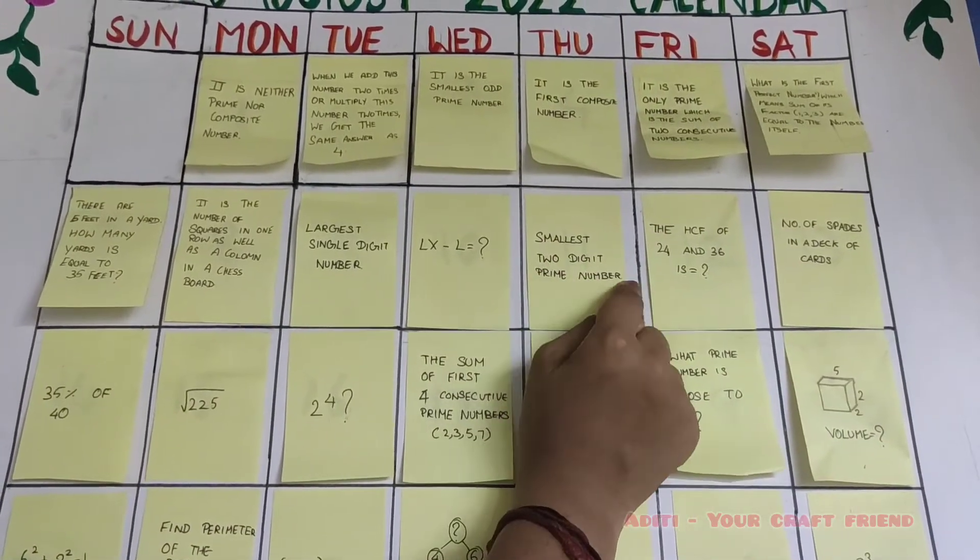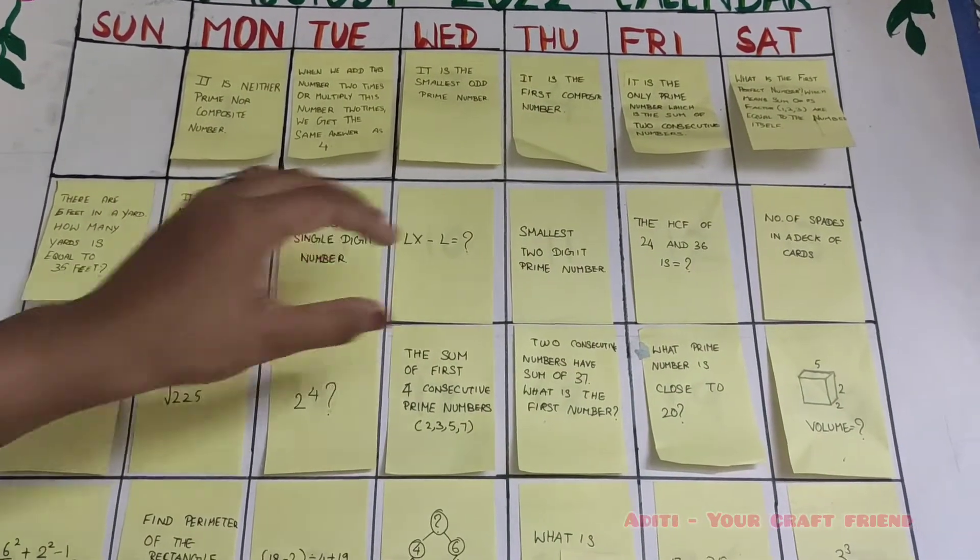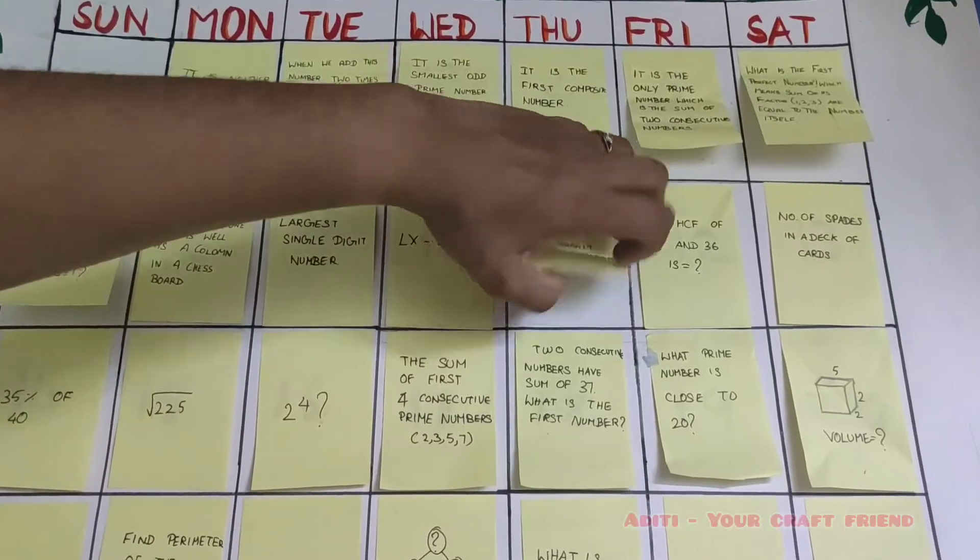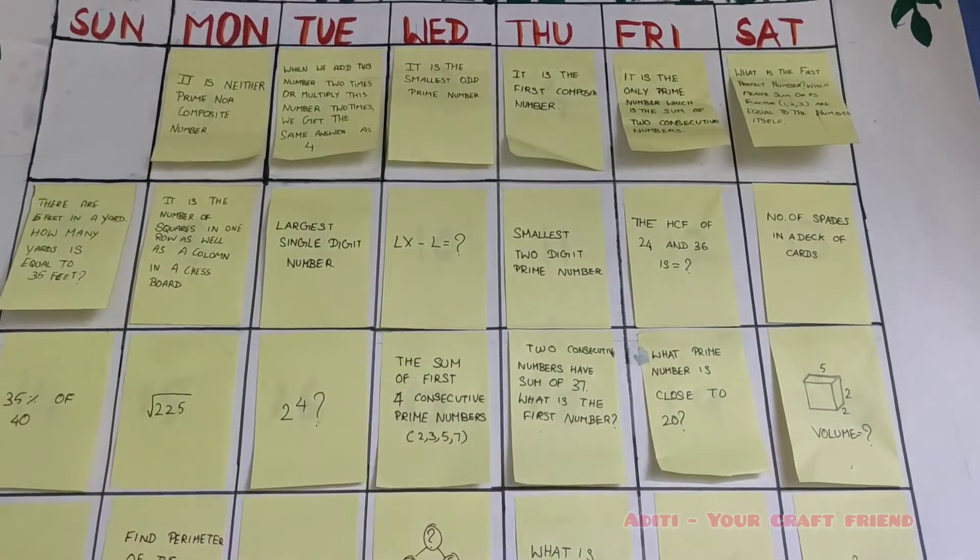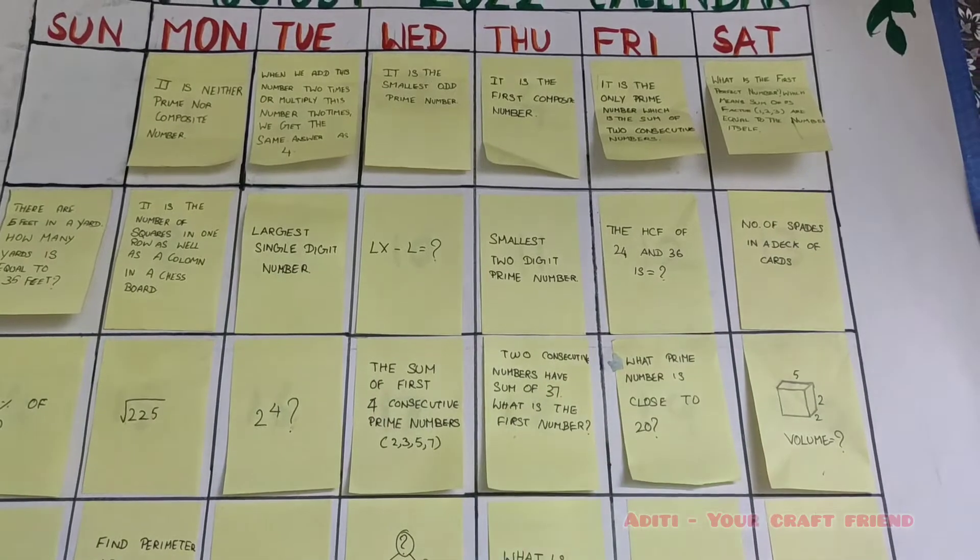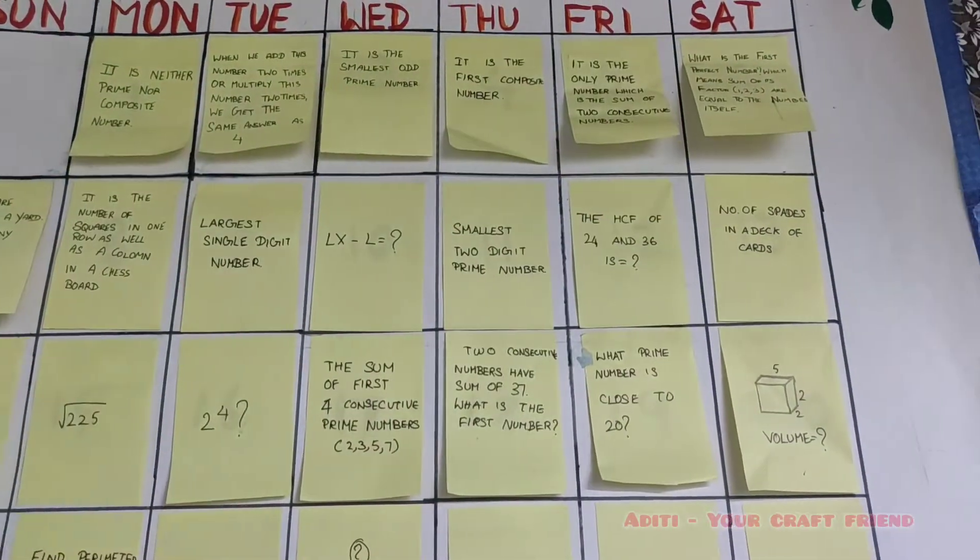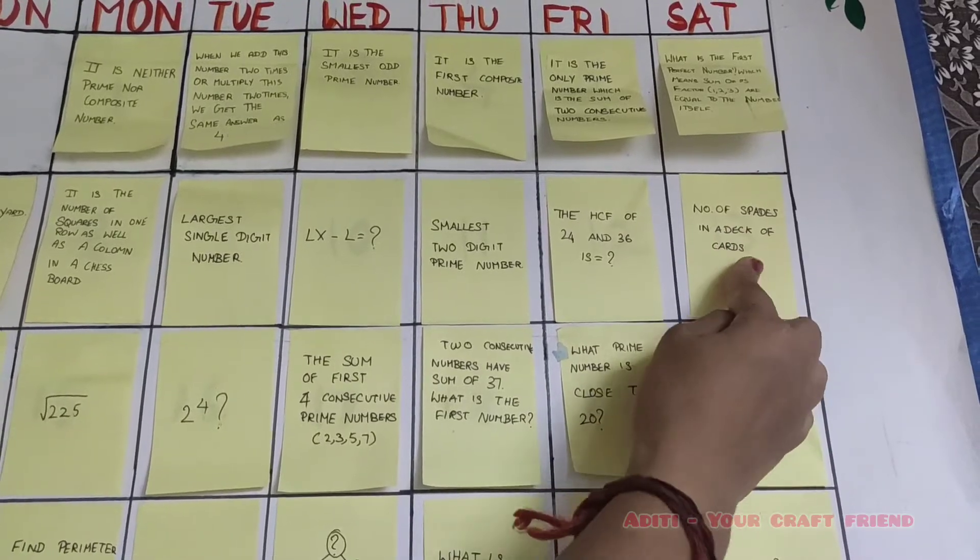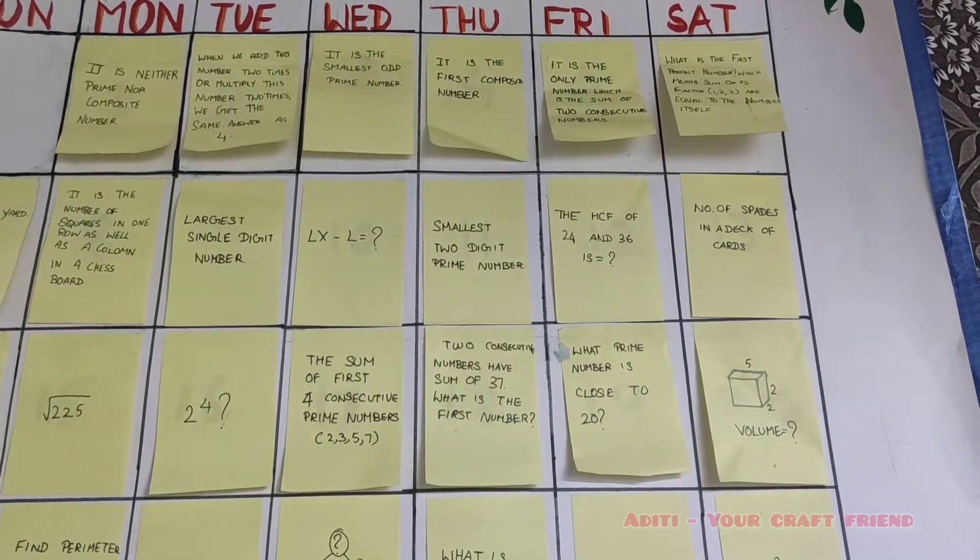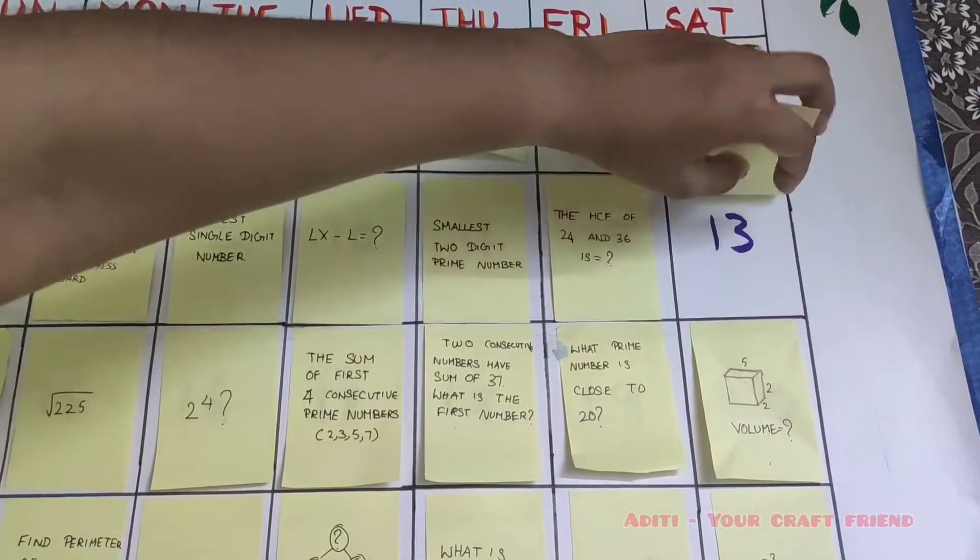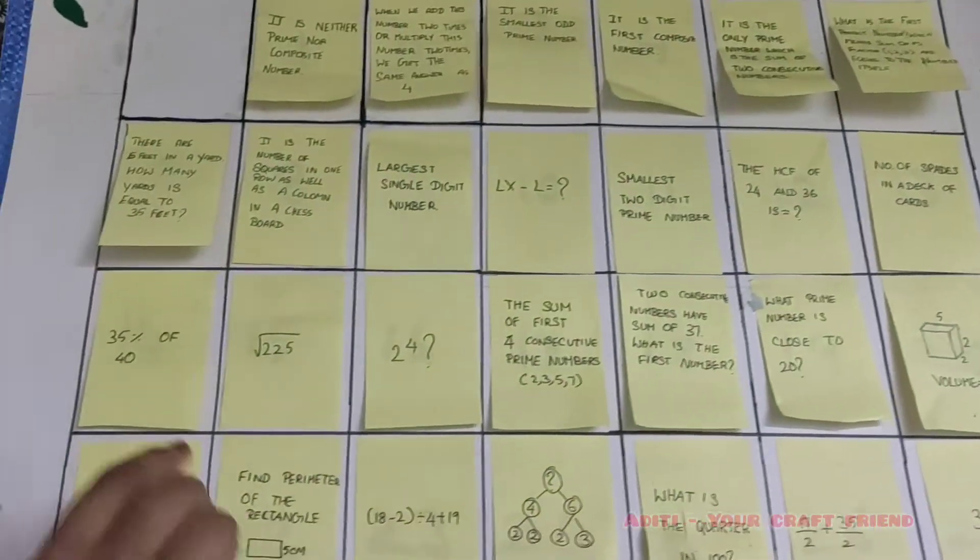Smallest two-digit prime number. What is the number? Yes, it's 11. The HCF of 24 and 36 is equal to 12. Yes, it's 12. Number of spades in a deck of cards. Can you guess? Yes, it's 13.